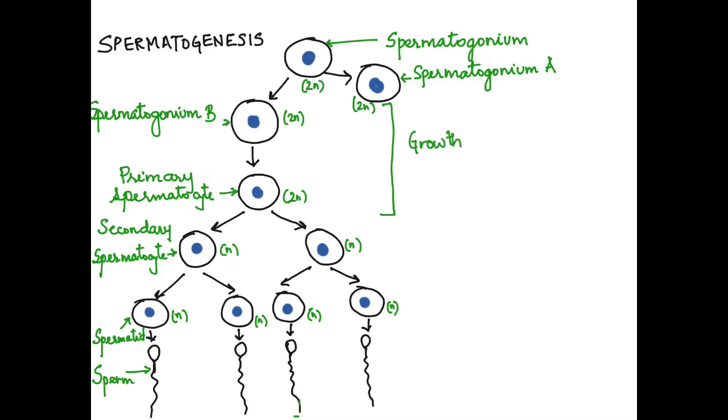The growth phase includes the spermatogonium to formation of the primary spermatocyte, whereas the formation of sperms from the spermatids is called spermiogenesis. The stage from the secondary spermatocyte to the formation of sperms is called the maturation phase. This is the process of spermatogenesis.